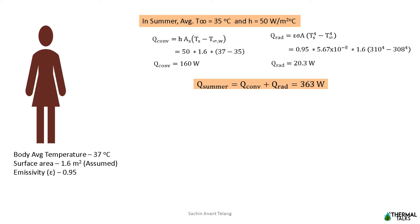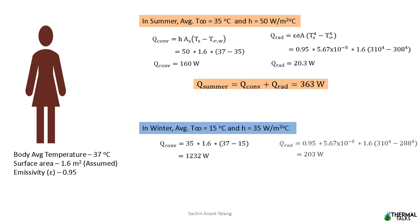When I take it to a condition of winter when ambient temperature is 15 degrees Celsius and convective heat transfer coefficient is 35, I can calculate convective heat transfer is 1232 Watt and radiation heat transfer is 203, together around 1435. So it is very clear from this numerical that in summer the body tends to lose less heat than in winter. I guess that is why we feel cold during winter seasons but not in summer season.